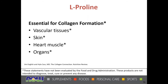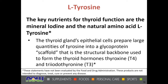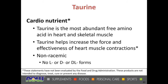L-proline is essential for collagen formation and involved in vascular tissues, skin, heart muscle, and organs. L-tyrosine supports healthy mood and is a precursor for the neurotransmitters dopamine and norepinephrine. It is also one of the key nutrients for thyroid function, along with the mineral iodine. The epithelial cells in the thyroid gland create a scaffold — a structural backbone used by thyroid hormones T4 and T3 — and iodine and the scaffold are secreted into the thyroid gland to facilitate hormone synthesis. The hormones are then separated from the scaffolding and enter circulation, where they can also be recycled by the body.